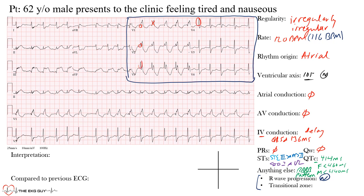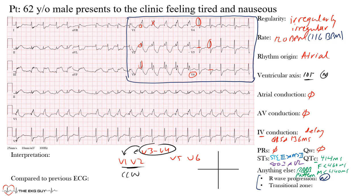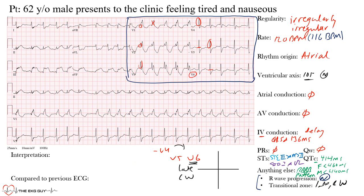For the transitional zone, we're looking for where the complexes go from mostly negative to mostly positive across V1 to V6. Focusing on the initial portion — to avoid being misled by the terminal RBBB deflection — the complexes appear mostly positive through most leads, with the transition appearing around V6, making it the most isoelectric lead. Normal transition is between V3 and V4, so this represents a late or clockwise transition.